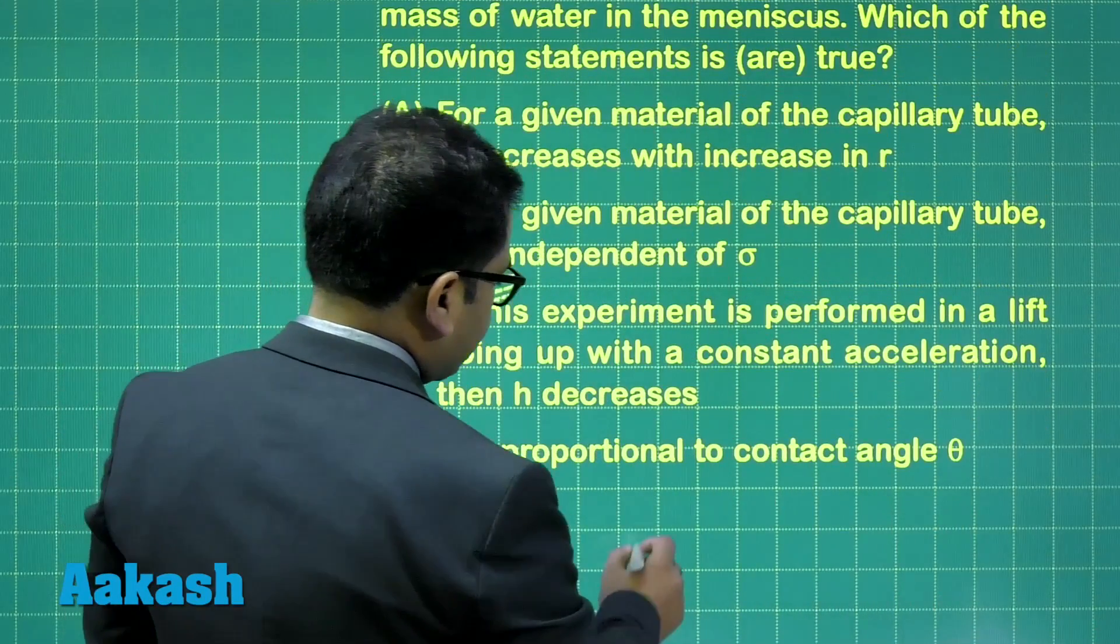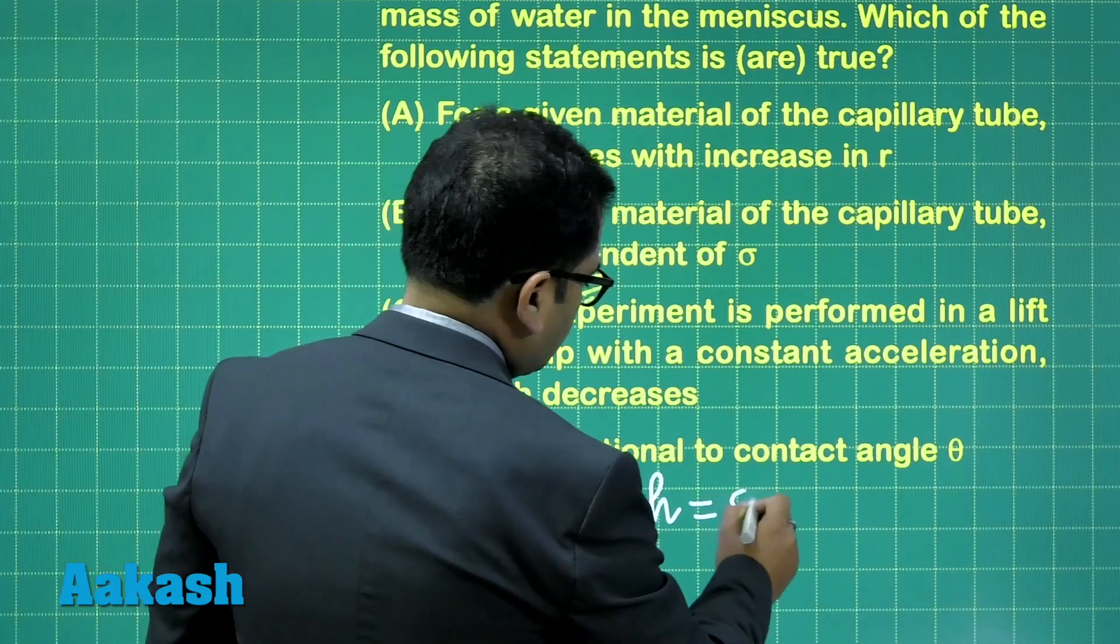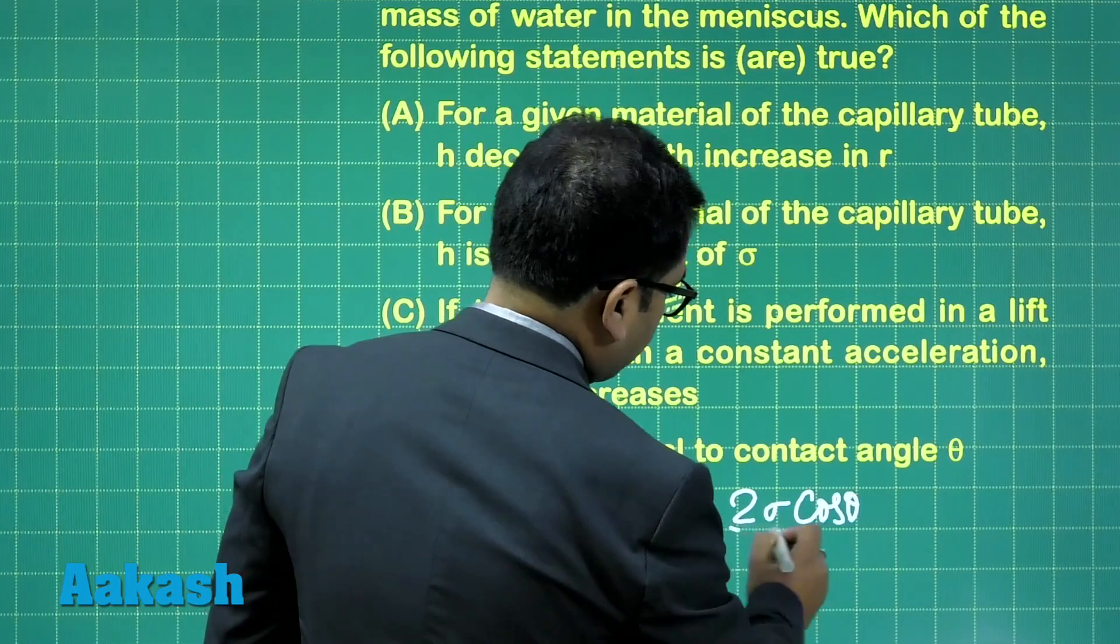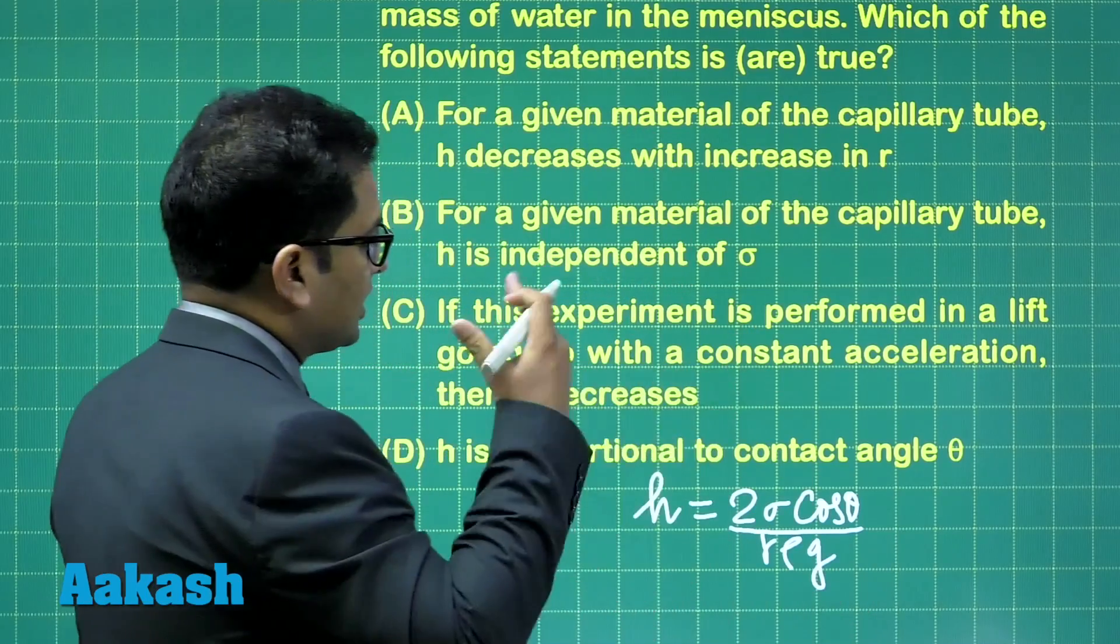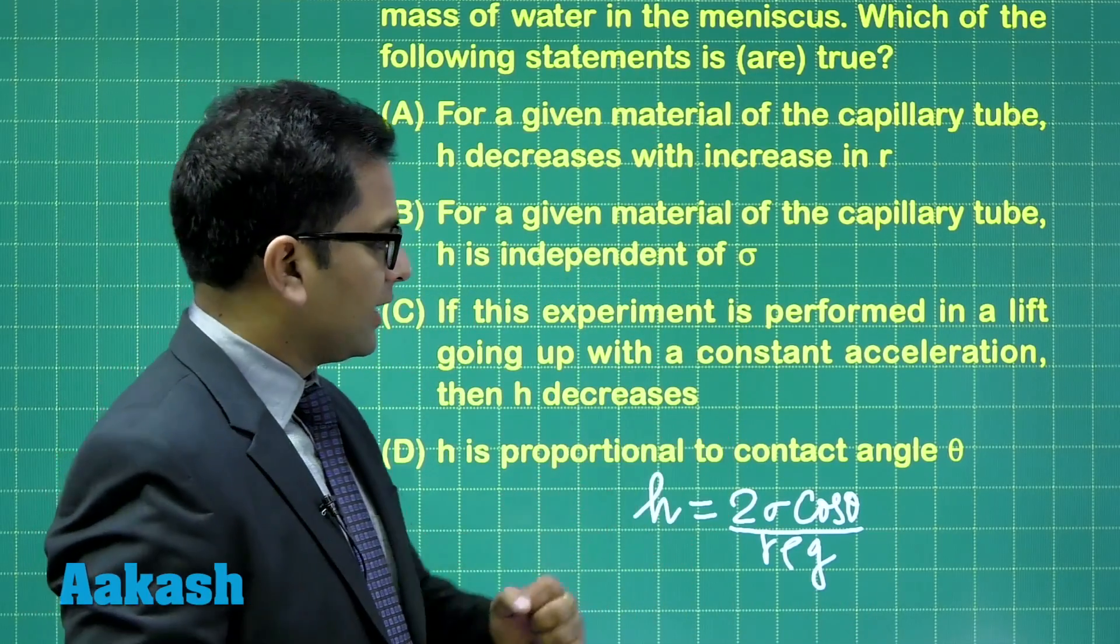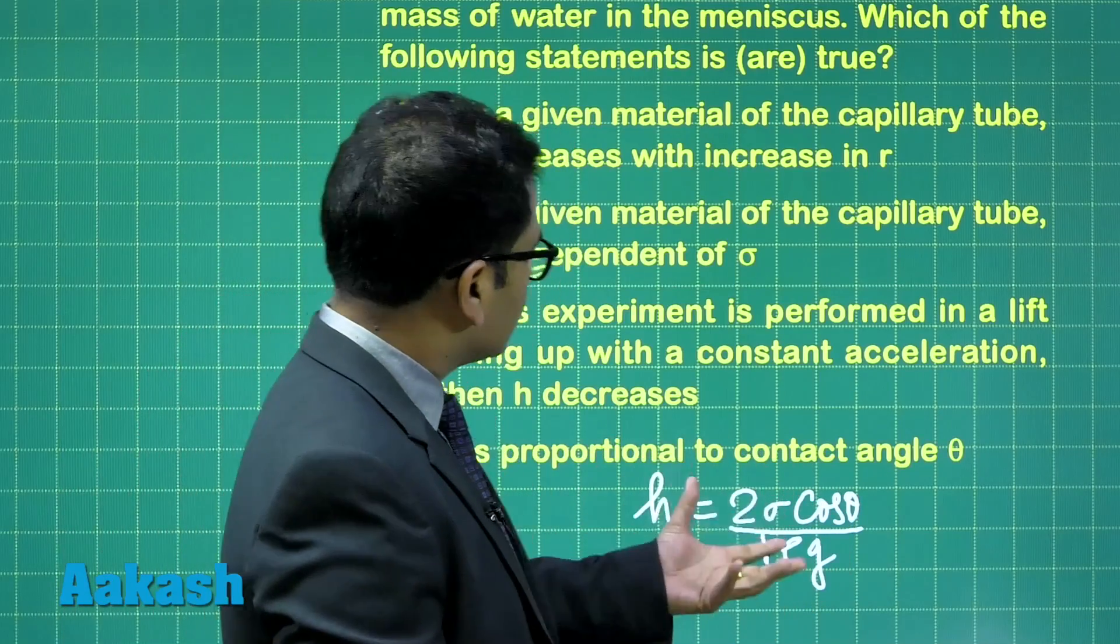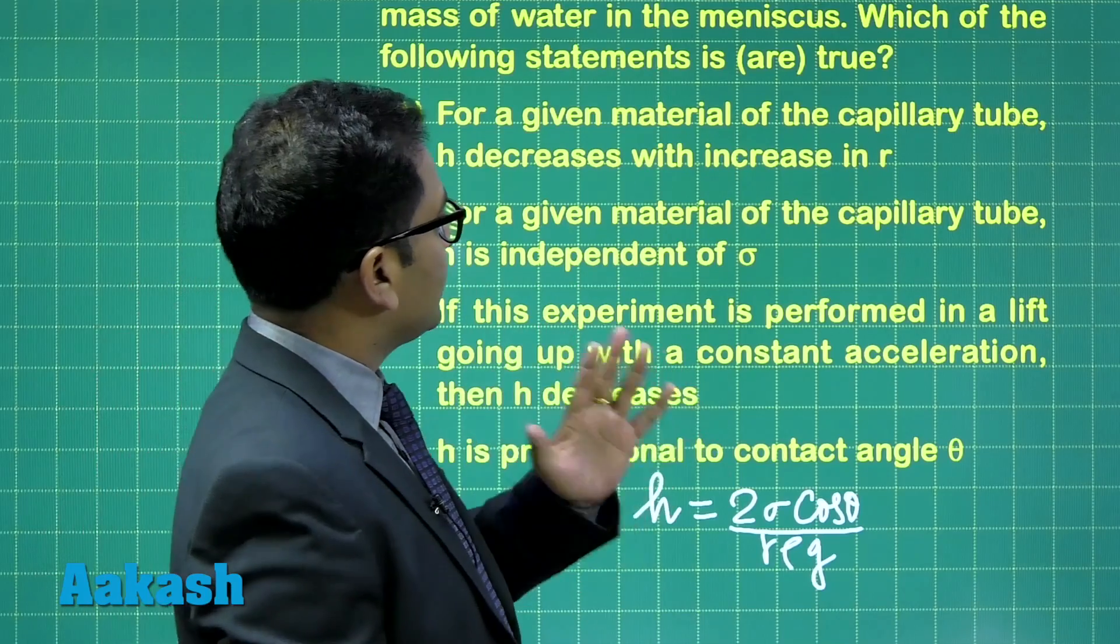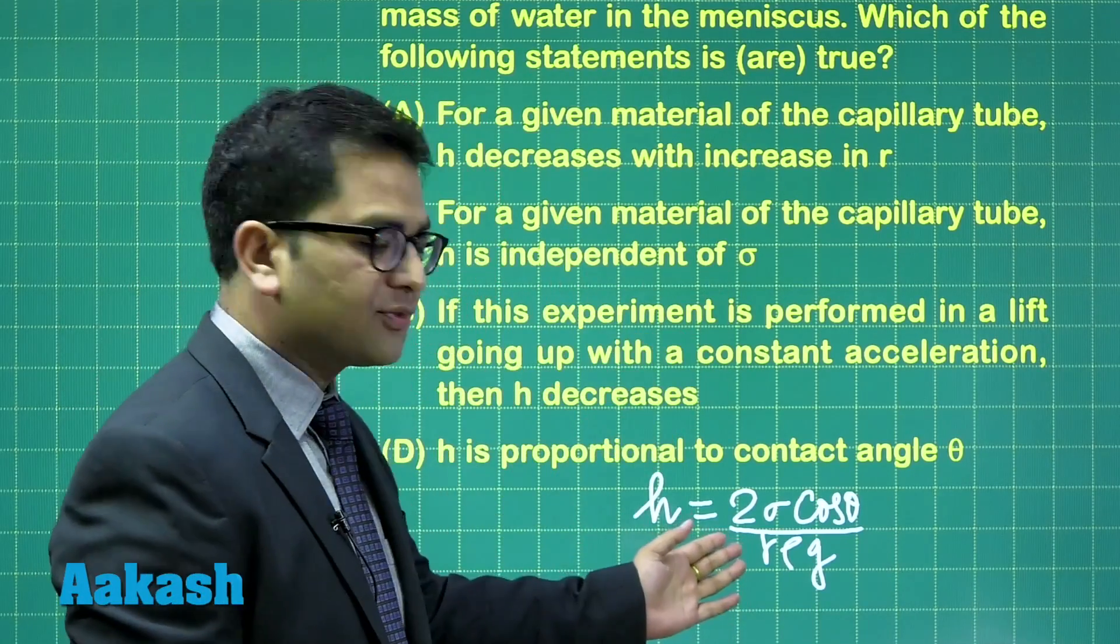The formula for the height is h equals 2 sigma cos theta divided by r rho g, where r is the radius of the tube, sigma is the surface tension, and theta is the angle of contact. The first option seems perfectly correct. For a given material of the capillary tube, h decreases with increase in r. That's fine. With increase in r, h has to decrease.